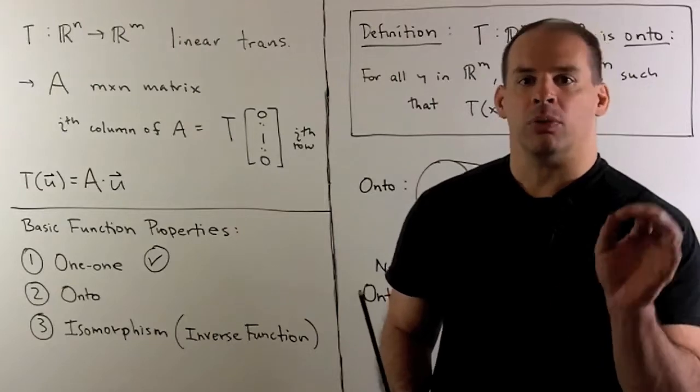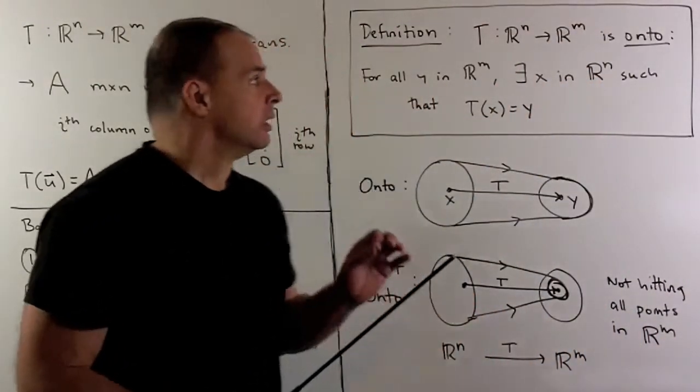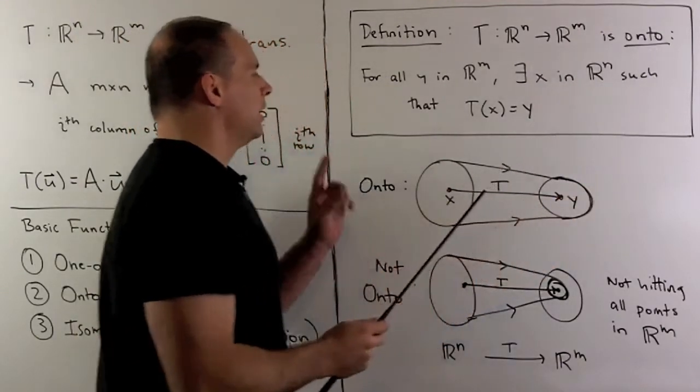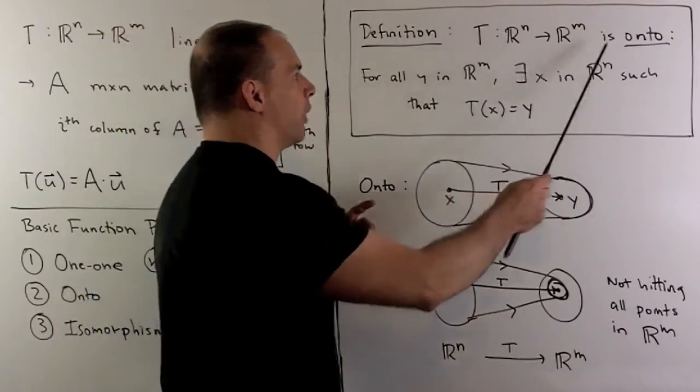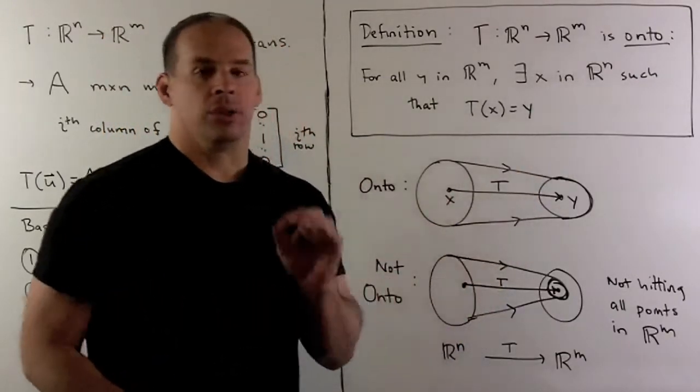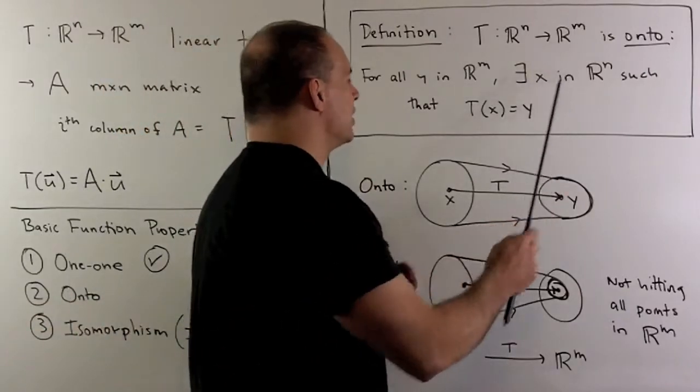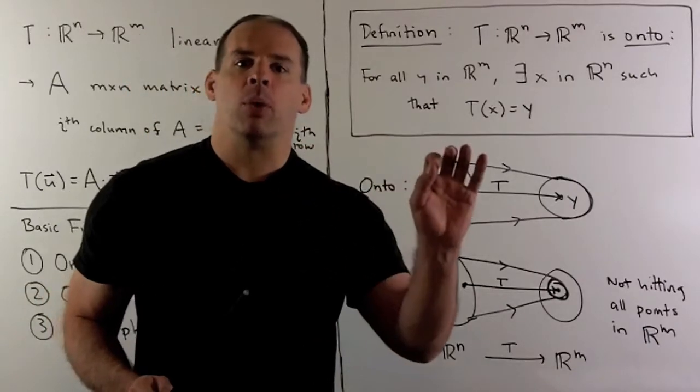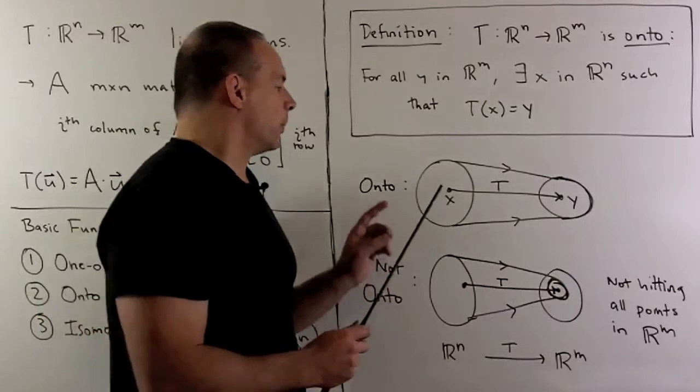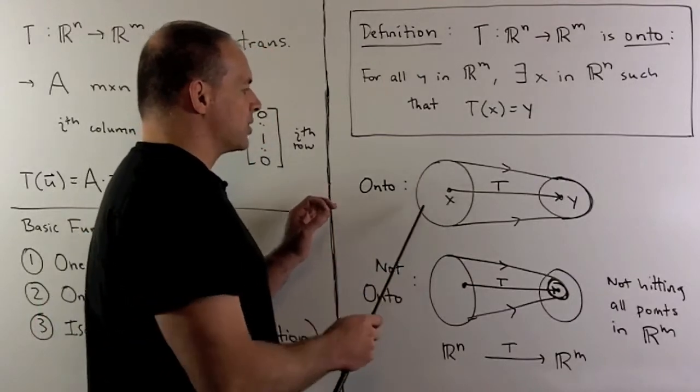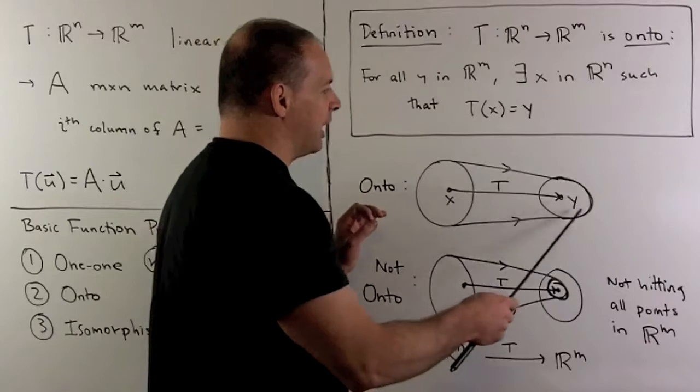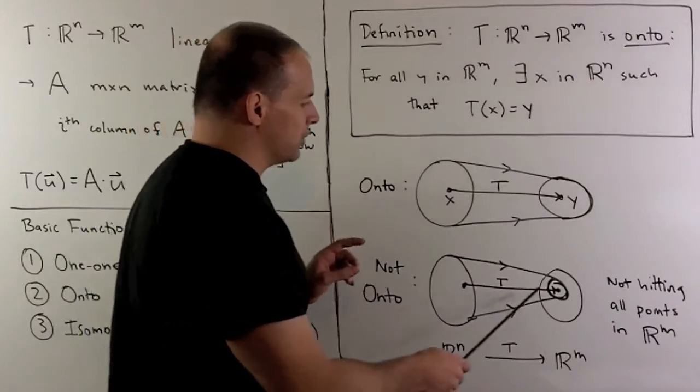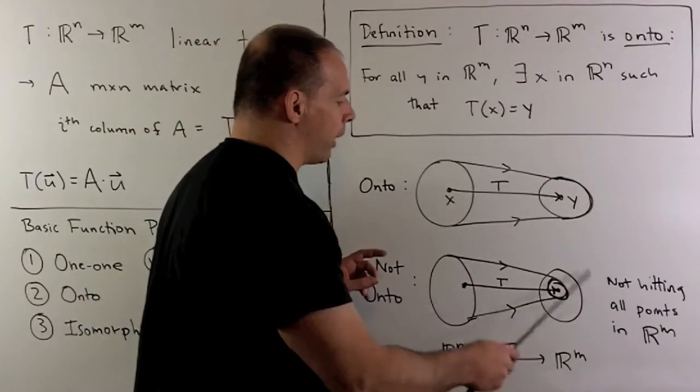Now, we recall the definition of onto. So if I have a map t between two spaces, we'll call it onto if for any y in the range space, there exists some x in our domain space such that t of x is equal to y. So the idea here for onto, we're hitting every point in our range space. So the picture looks something like this. I draw it like this just to suggest that we're hitting everything over on this side. So something that wouldn't be onto would be mapping into some proper subset of our range space.